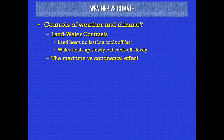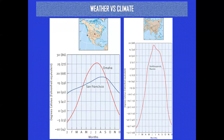Land and water is another control of climate — something a place is considered maritime versus continental. Think about Florida versus Nebraska. San Francisco and Omaha, Nebraska — notice how much warmer and colder Omaha gets than San Francisco. And the city of Verkhoyansk in Russia, in the middle of Siberia — pretty mild in summer, ridiculously cold in winter, with a huge temperature swing throughout the year.